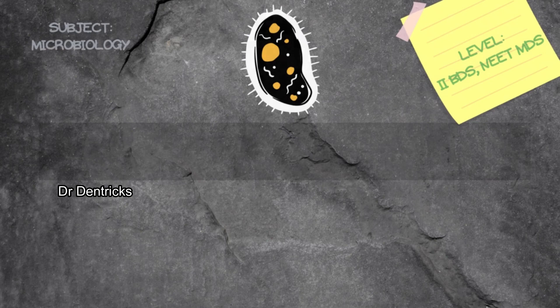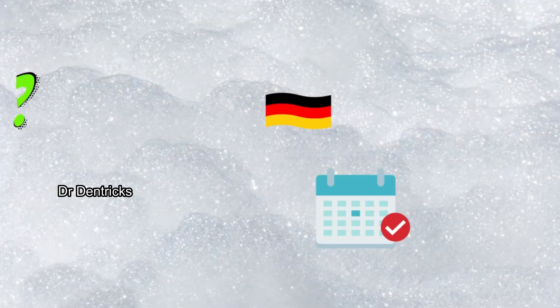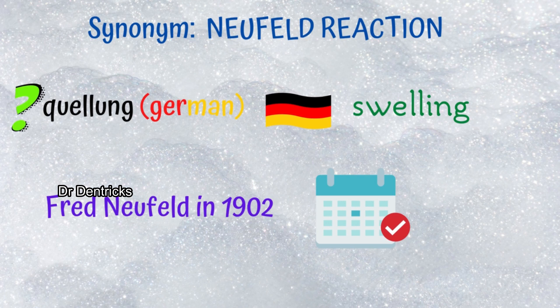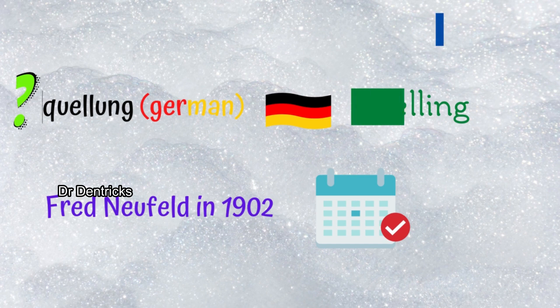In this video, we'll be describing the story behind Quellung's reaction. One should know the synonyms of medical terminology. The Quellung's reaction is also known as the Neufeld reaction. Don't get confused with the word Quellung — it's not the inventor's name or an alternate name; it's a German word meaning 'swelling.' Fred Neufeld invented this reaction in 1902, so he named it the Neufeld reaction.